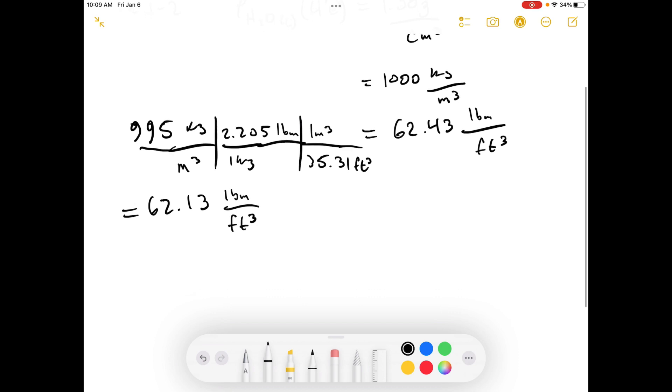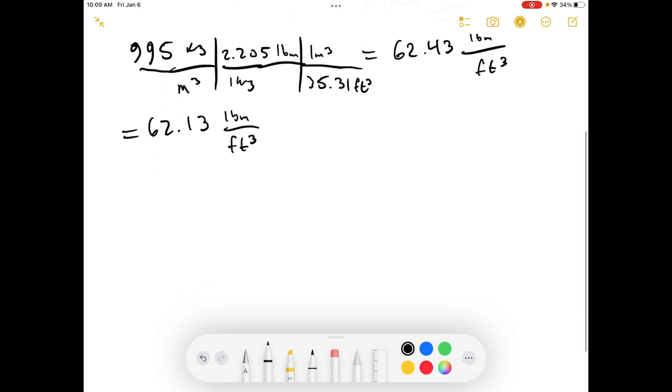Now, if we wanted to do this with just the one conversion, we could say 995 kilograms per meter cubed. In 1,000 kilograms per meter cubed, there are 62.43 pounds mass per foot cubed. And this equals 62.12 pounds mass per feet cubed.